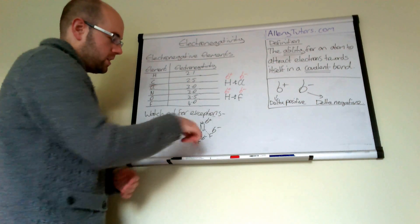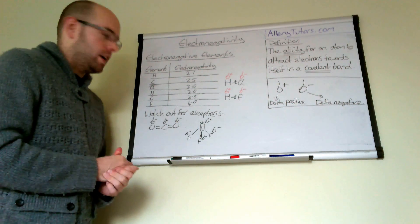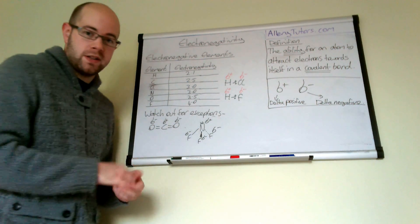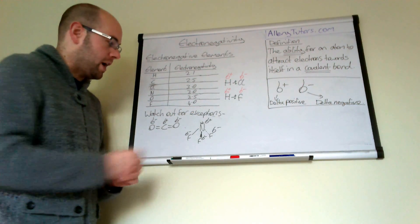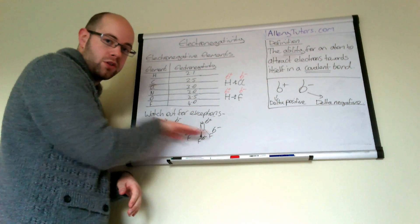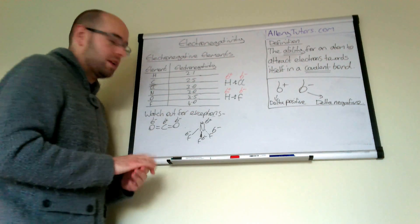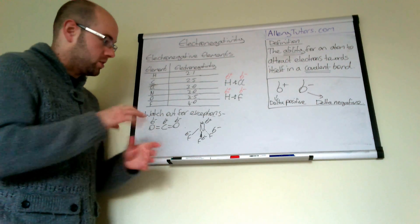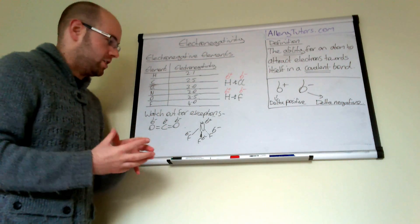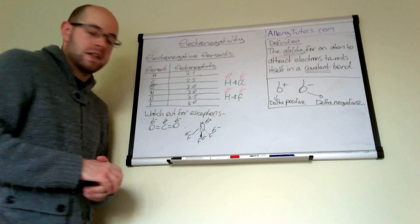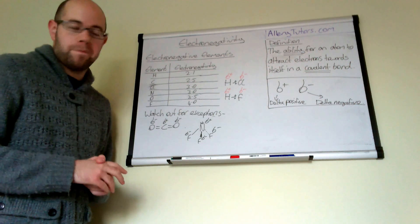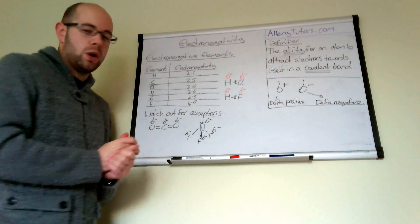It's the same with NF3. Again, you've got very electronegative fluorines, but you have a lone pair on that nitrogen. That lone pair can balance out the negative charge on the bottom and the top as well. Because the electrons are spread out evenly across this whole molecule, NF3 is actually not very polar.